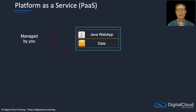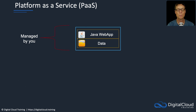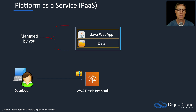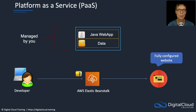We then have Platform as a Service. In this case, even more responsibility has been taken away from you — all you have to manage is the data and the actual application code itself. This is really popular with developers because they can take their code and upload it to a PaaS offering such as Elastic Beanstalk, which would then create an application — something like a website or another type of application. The developer is not responsible for configuring operating systems or application frameworks; they literally just upload their code and the service takes care of everything else through to the application being running and available to use.